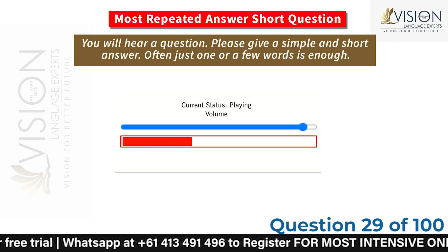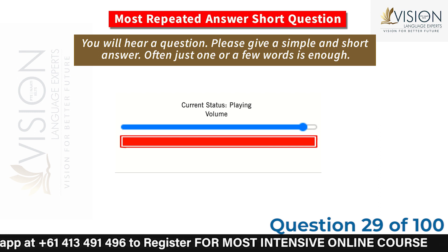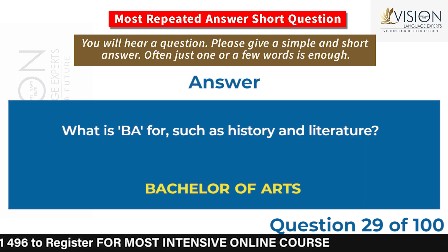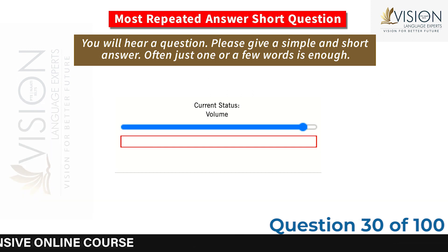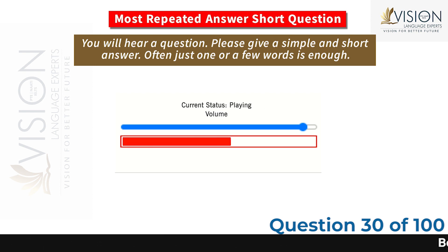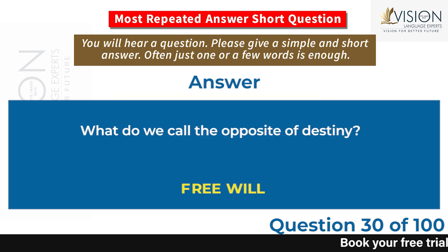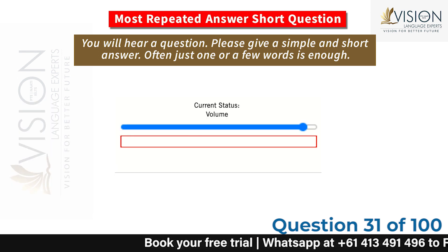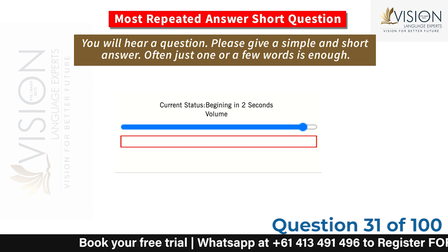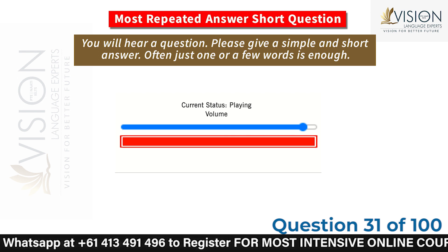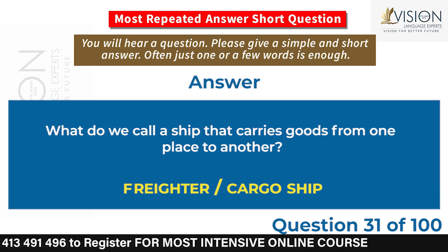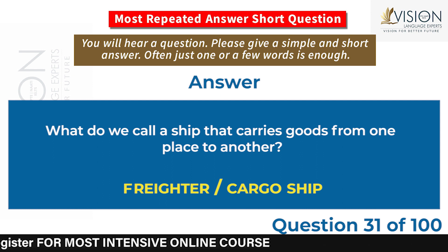What is B.A. for subjects such as history and literature? Bachelor of Arts. What do we call the opposite of destiny? Free will. What do we call a ship that carries goods from one place to another? Freighter / cargo ship.